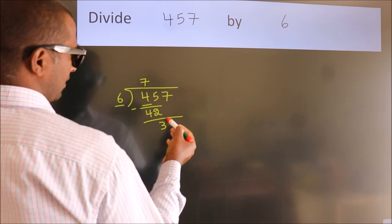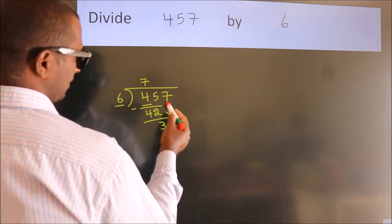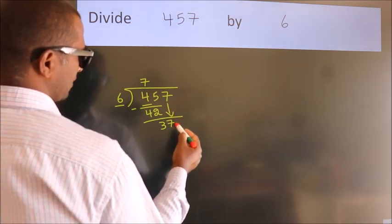After this, bring down the beside number. So, 7 down. So, 37.